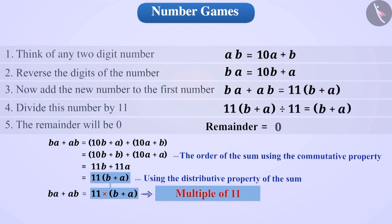So, whenever this sum is divided by 11, the remainder will be 0. Now, you must have understood how this game works.